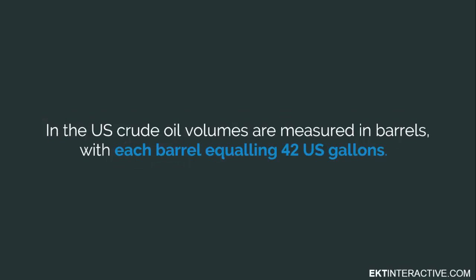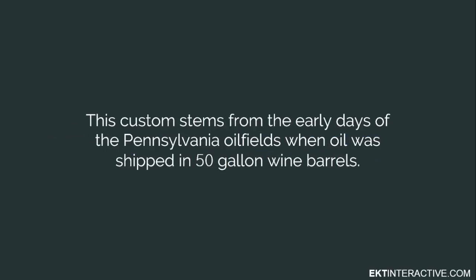In the U.S., crude oil volumes are measured in barrels, with each barrel equaling 42 U.S. gallons. This converts to 35 imperial gallons in Europe. This custom stems from the early days of the Pennsylvania oil fields when oil was shipped in 50-gallon wine barrels. To allow for spillage during transportation, payment at the destination was only for 42 gallons, and shippers soon learned to seal the barrels and include only 42 gallons.